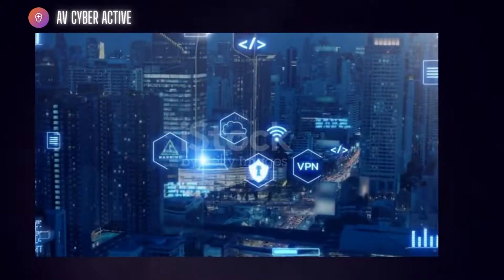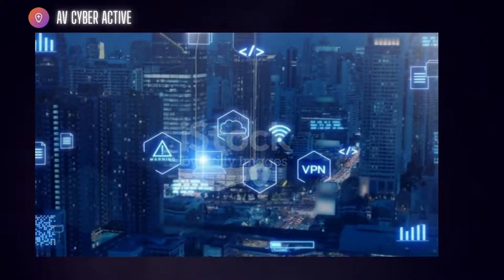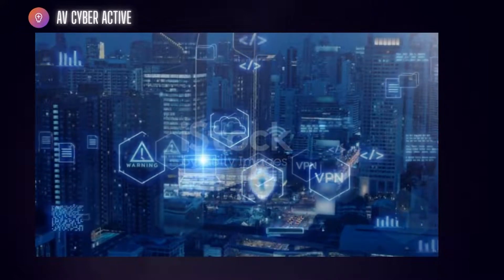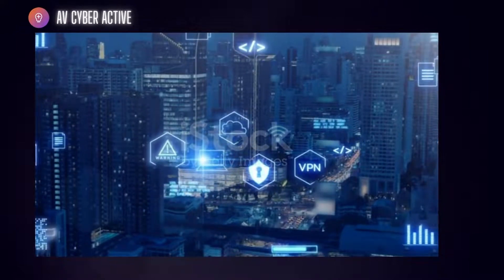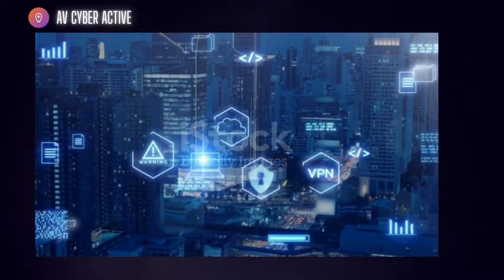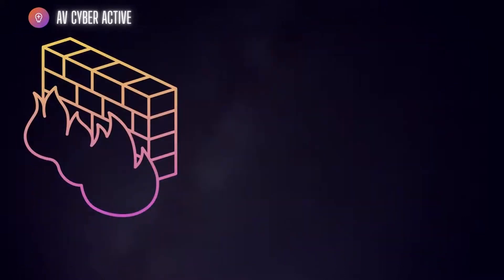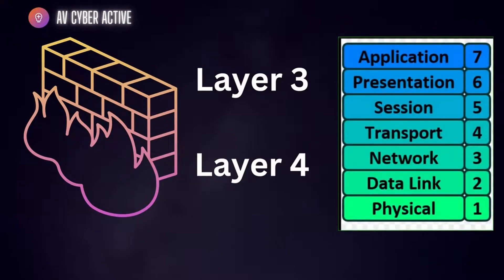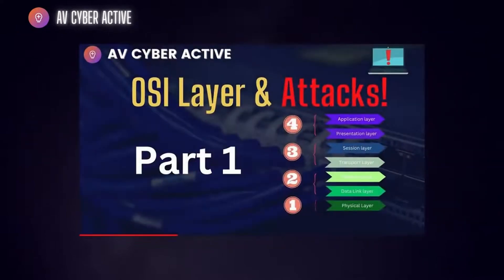They analyze the entire packet, looking at the complete data flow, and can even perform deep packet inspection to identify potential threats and malicious activities. This type of firewall is situated at layer 3 and layer 4 of the OSI model. Check out my video series on the OSI model and various protocols — I'll link them on the video cards as well.